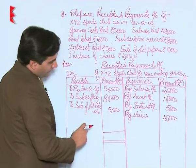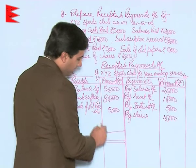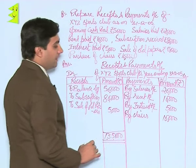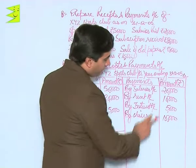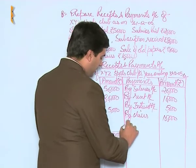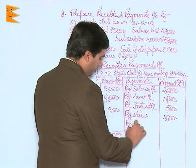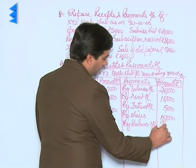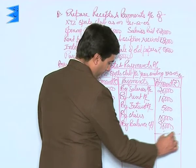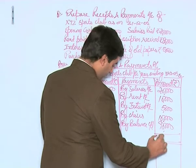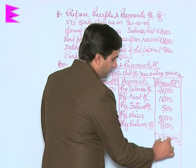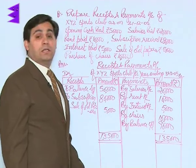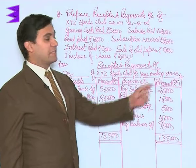On the credit side all the entries have been put in. Let us total it out and find the balance. The total on the debit side is 1,35,000. Out of this 1,35,000 we deduct 45,000, which gives us a balance — 'by balance carried down' — of 90,000. This 90,000 represents the closing balance of cash at the end of the accounting period ending 31st December 2005.